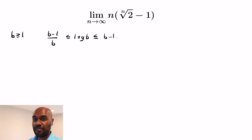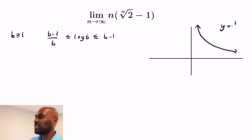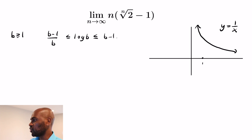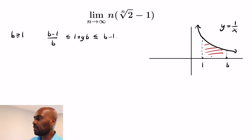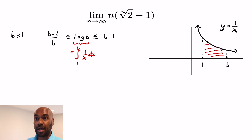You might think, where does this come from? Let's establish this inequality. We're going to look at the function y = 1/x from 1 to b. The middle term log b is the red area, because log b equals the integral from 1 to b of 1/x dx, recognizing that log x is the antiderivative of 1/x.